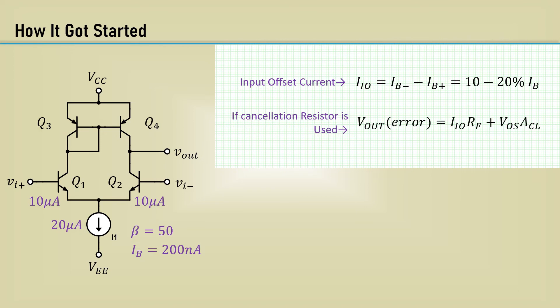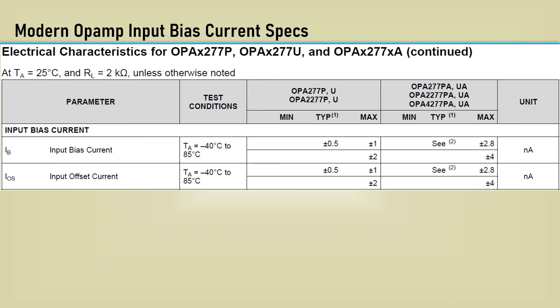The remaining output voltage error after cancellation is the input offset current times RF plus the input offset voltage times the closed loop gain. There has been significant progress in operational amplifier development. The input bias current of the OPA-277 series is a typical 1.5 nanoamp. But look at the input offset current. It's the same as the input bias current. It doesn't do any good to do cancellation if the input offset current is not a small fraction of the input bias current. DC precision is required. Just use the right op-amp.